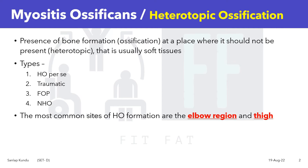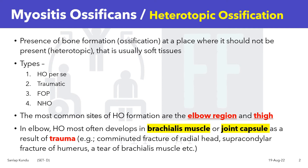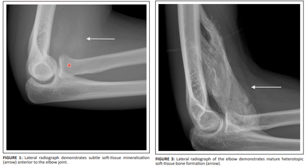The most common sites of heterotopic ossification formation are the elbow region and the thigh region. In elbow HO, it most often develops in the brachialis muscle or the joint capsule as a result of trauma. Examples of such trauma include comminuted fracture of the radial head, supracondylar fracture of the humerus, and tear of the brachialis muscle.